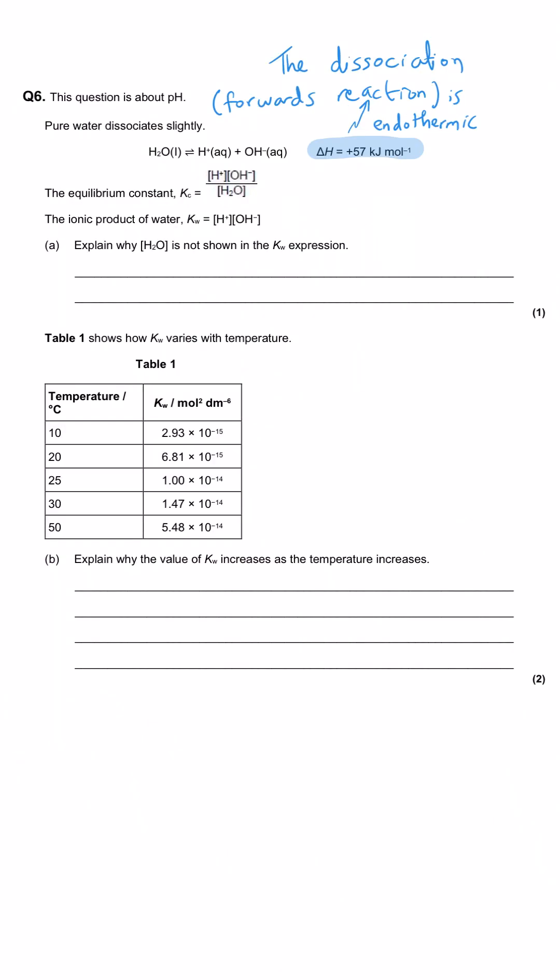Pure water dissociates slightly, as shown by this equilibrium. We've got water on the left, then we've got the reversible reaction symbol, and then we've got hydrogen ions and hydroxide ions on the right hand side. We've got the enthalpy change symbol showing us it is positive, so endothermic.